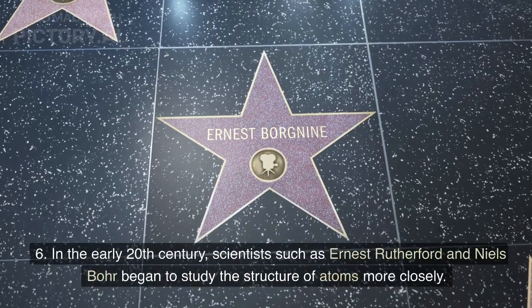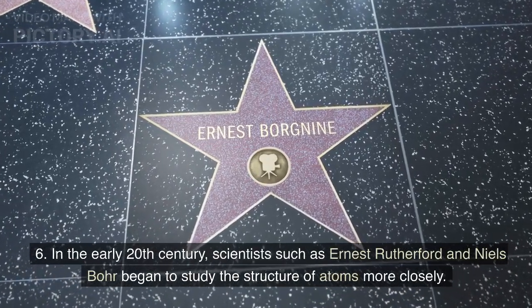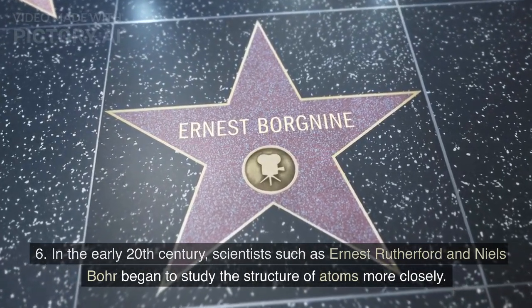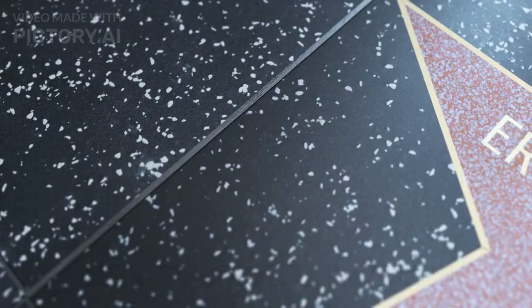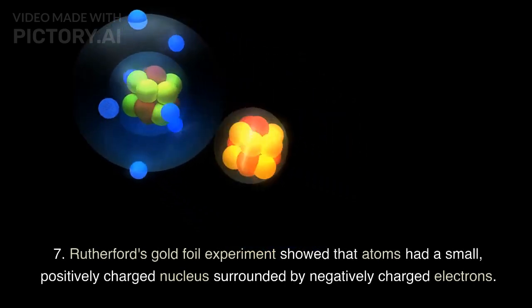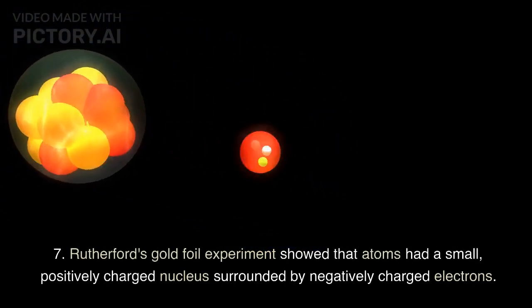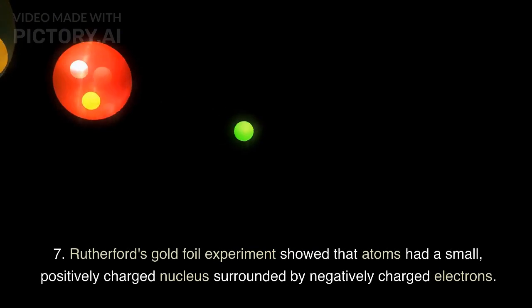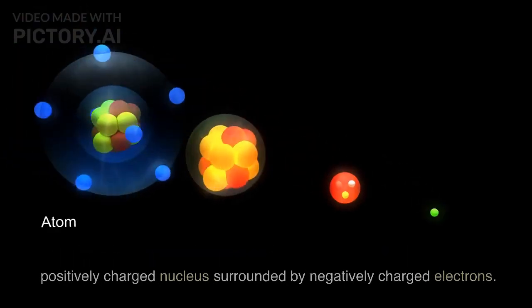In the early 20th century, scientists such as Ernest Rutherford and Niels Bohr began to study the structure of atoms more closely. Rutherford's gold foil experiment showed that atoms had a small, positively charged nucleus surrounded by negatively charged electrons.